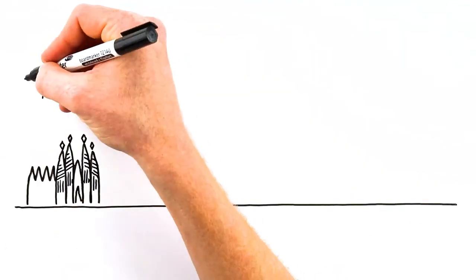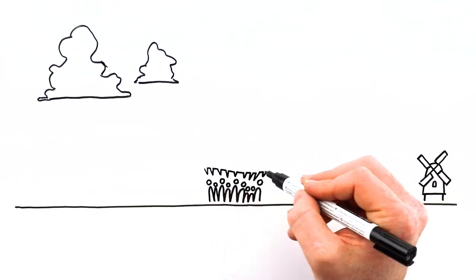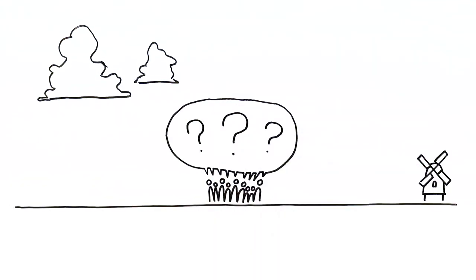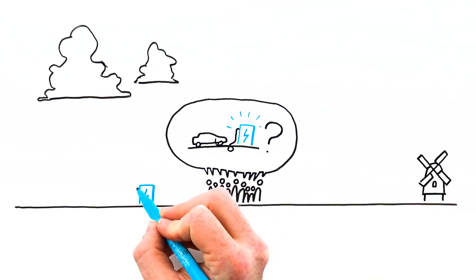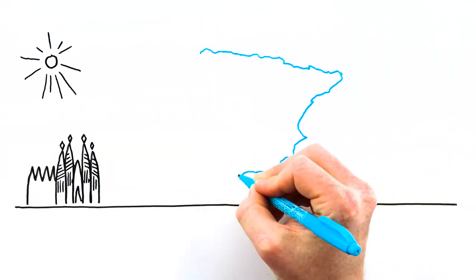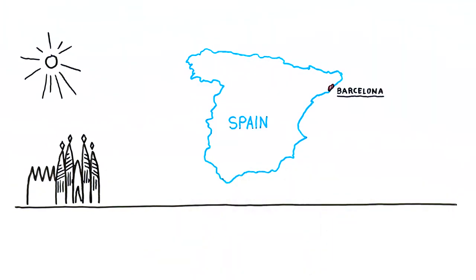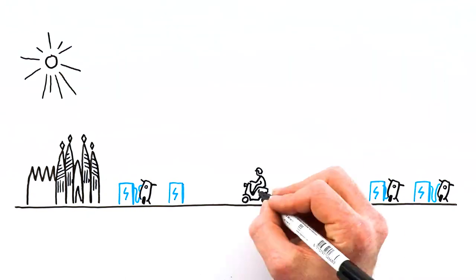Barcelona already had a strategic plan for electric mobility but was then inspired by Amsterdam's demand-driven approach. Residents can apply for a charging station, so facilities are available where they're needed the most. This practice will be adapted to the Catalan context, starting with a specific charging infrastructure strategy for electric motor scooters.